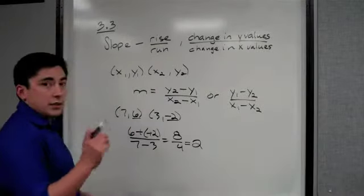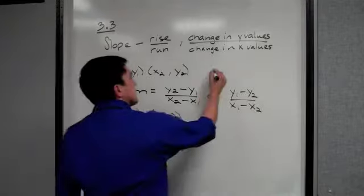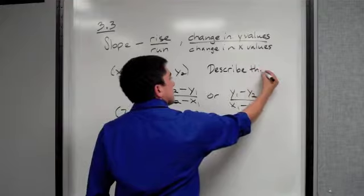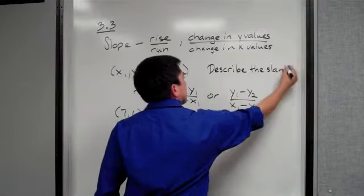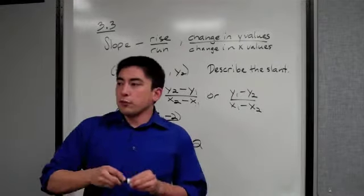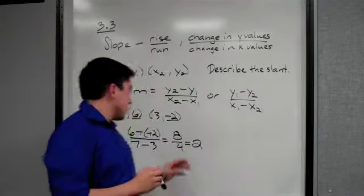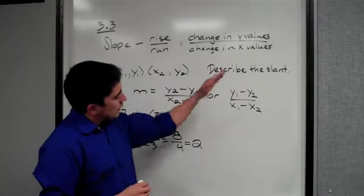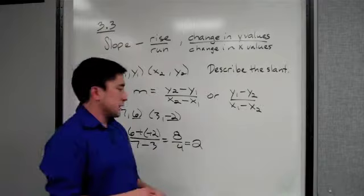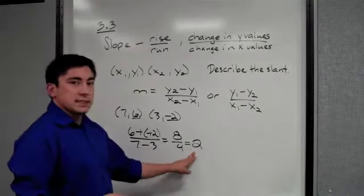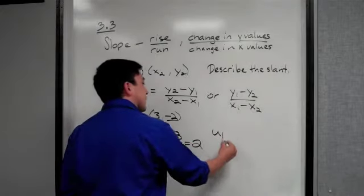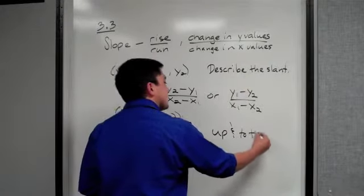The other thing it's going to ask you is to describe the slant. You read a graph like you read a book, from left to right. Therefore, the slope is either going up into the right or down into the right if this number is anything except zero or undefined. Since it is a positive slope, this is going to be going up and to the right.